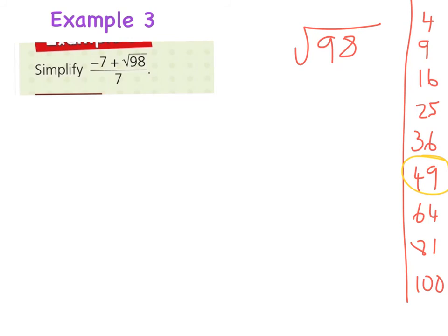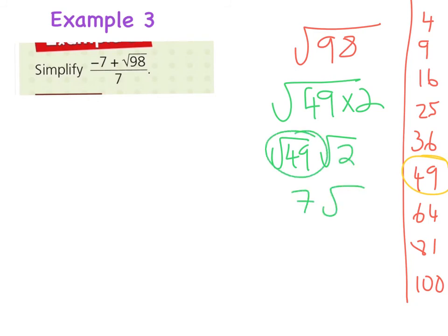So another way of writing √98 is to write it like this, the square root of 49 multiplied by 2, which is the same as writing √49 multiplied by √2. But √49 we can write as 7. So that becomes 7√2. And now it will be much easier to solve.